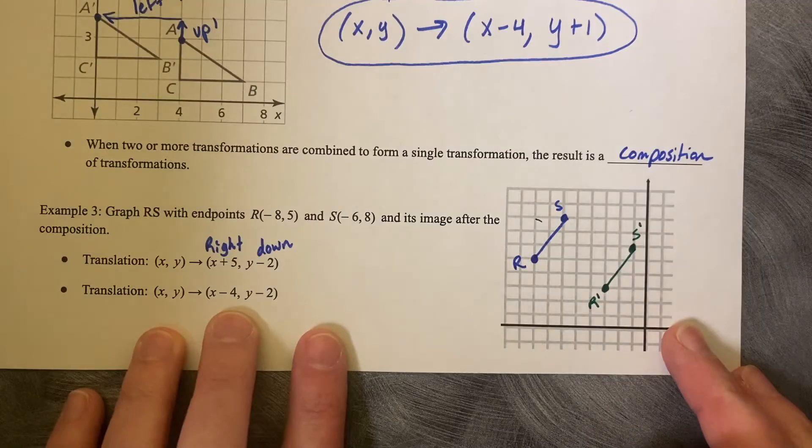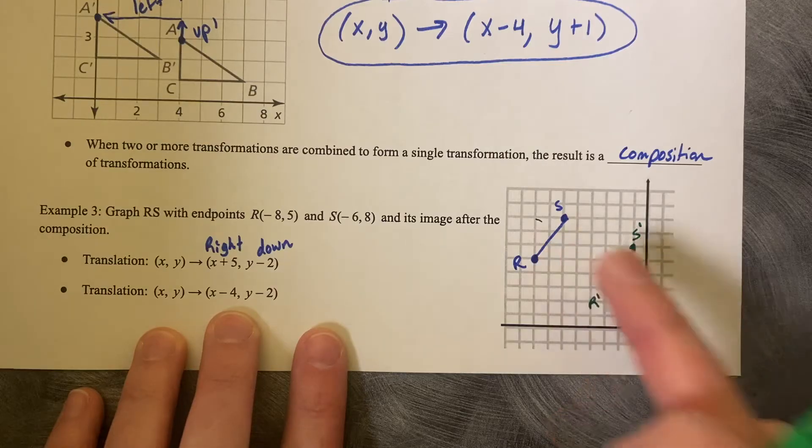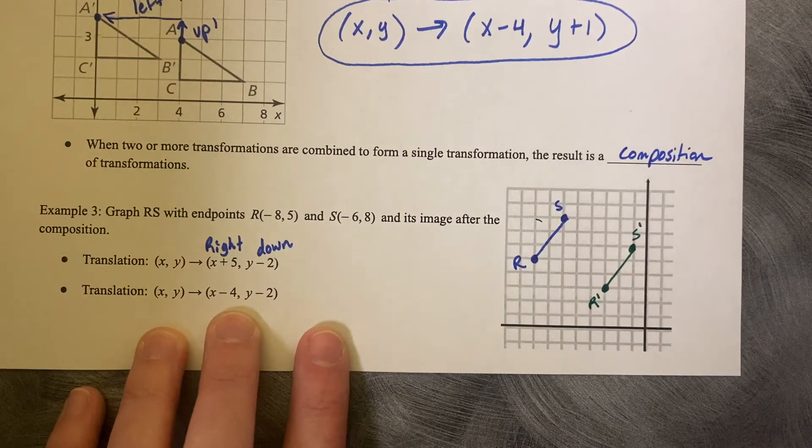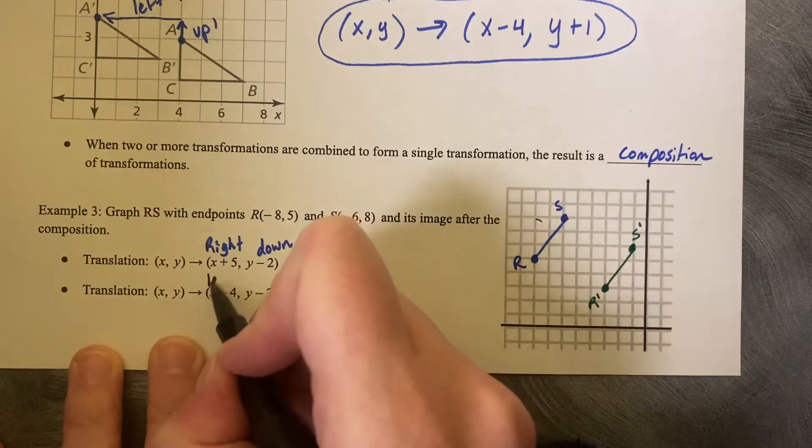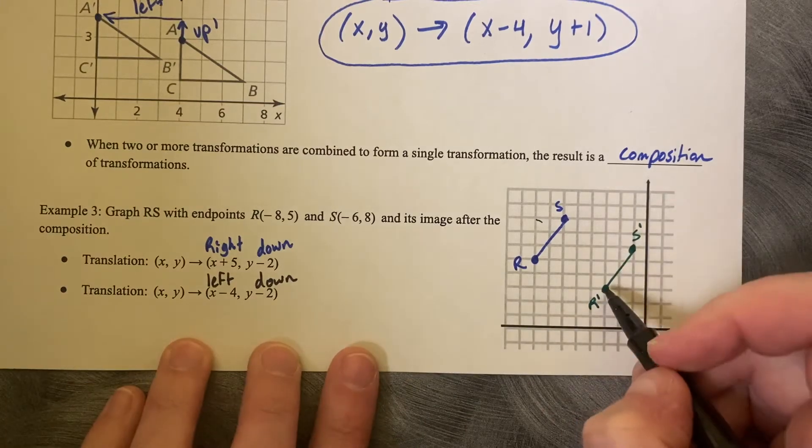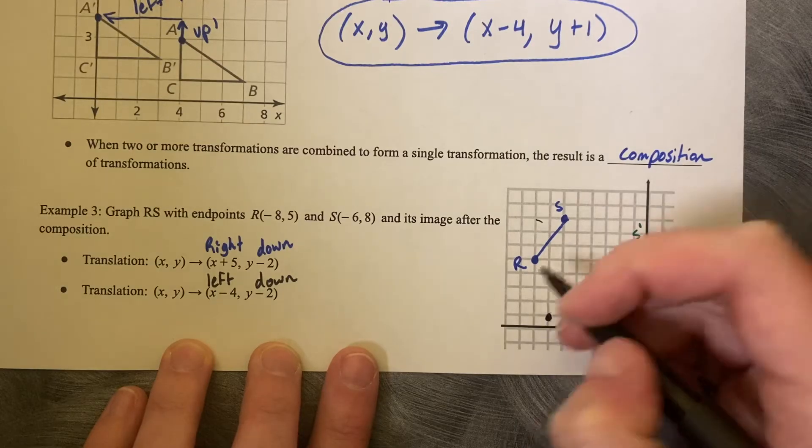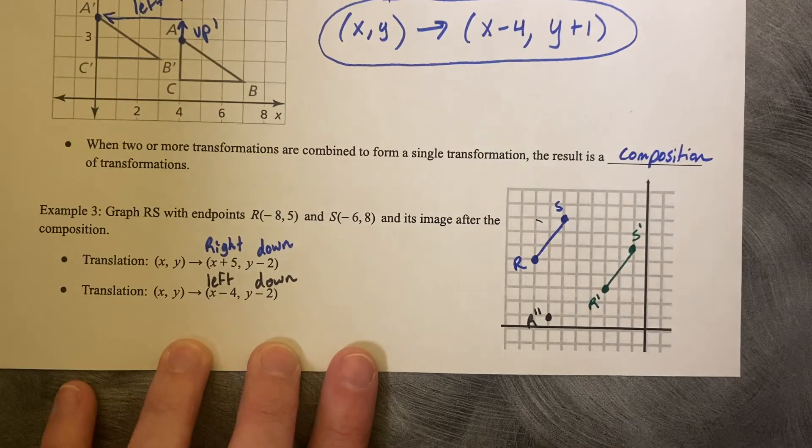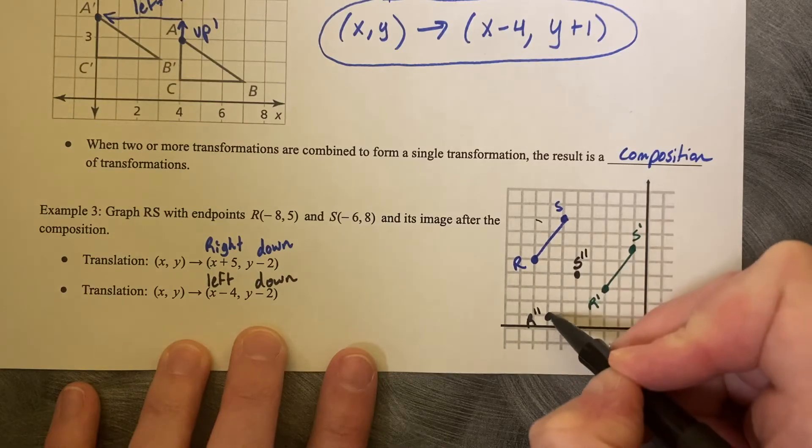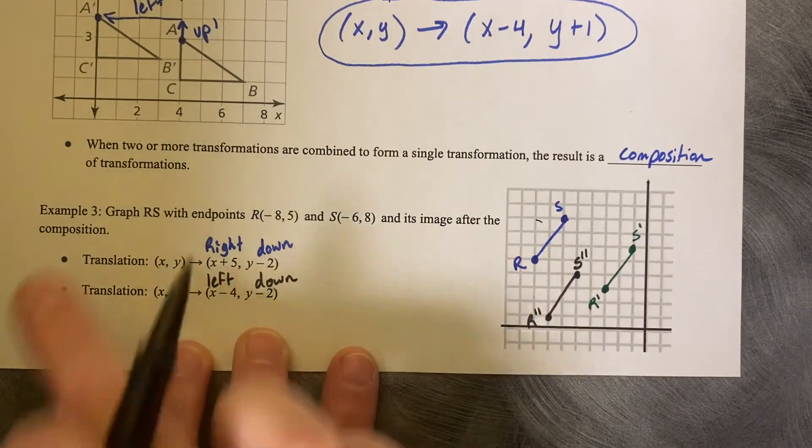Now finally, they want us to make another translation. This is going to be the translation on your prime image. You're not going to go back to your pre-image. You're going to use your R prime, S prime values. So now for our final one, we'd like to go X minus 4, so that's left 4, and again, down 2. So I'm going to use R. So left 4: 1, 2, 3, 4, and down 2. So now this is R double prime, S double prime. And we'd like to do the same thing to S. So up 3 over 2, S double prime. So now R double prime, S double prime is your final image after the composition.